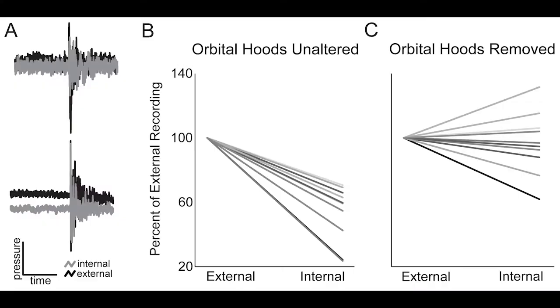What we find is that the pressure that reaches our sensors inside the orbital hood is much lower than the pressures that we detect outside of the orbital hood. When we leave our sensors in place in our experimental individual, but we surgically remove the orbital hood, we find that there's no difference between the sensors.